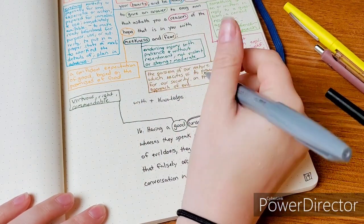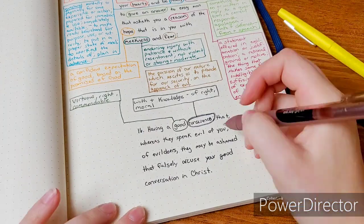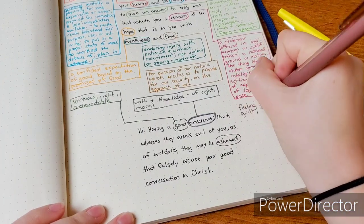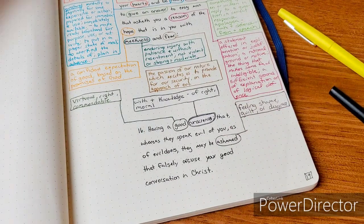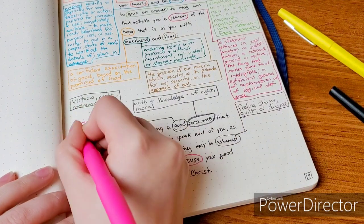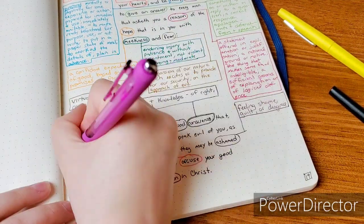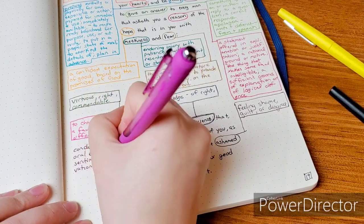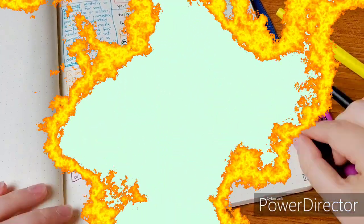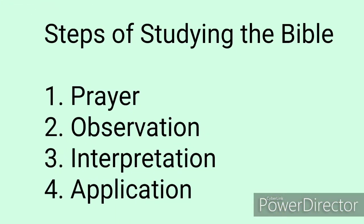Now we're going down to verse 16. I write the same thing, giving space, and then we're going to define some more words. 'Good' is virtuous, right, or commendable. 'Conscience' is basically two words: 'con' meaning with, and then knowledge of right. 'Ashamed' means feeling shame, guilt, or disgrace. 'Accuse' is to charge with a fault or offense. 'Conversation' means conduct or behavior, and it is also an oral exchange of sentiments, observations, opinions, or ideas.